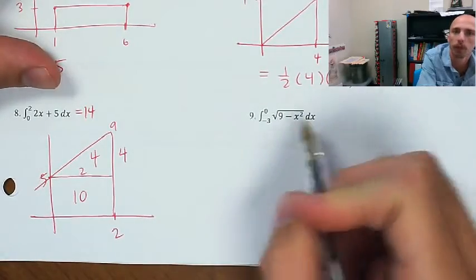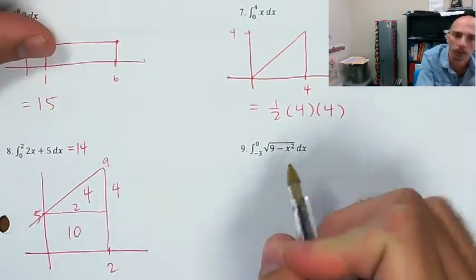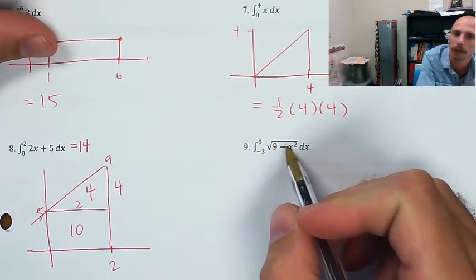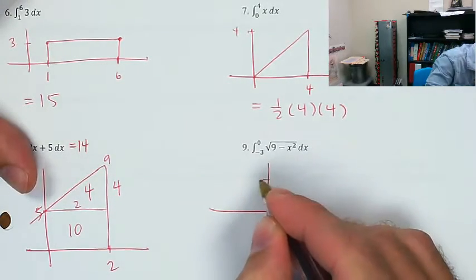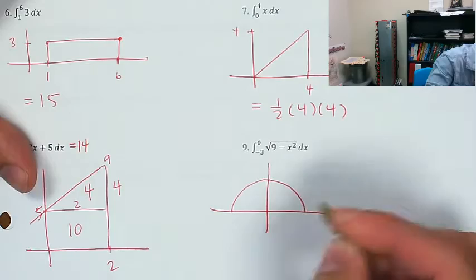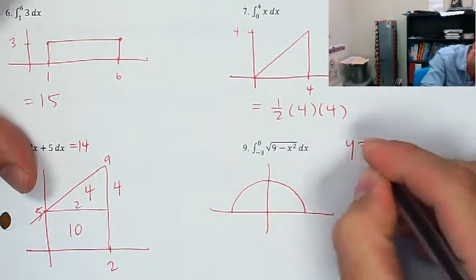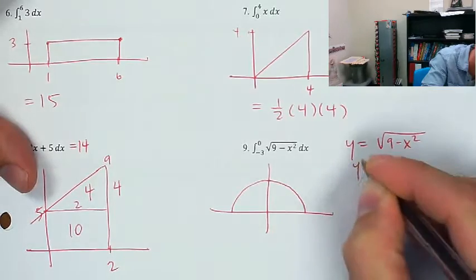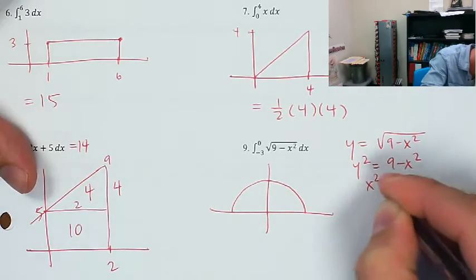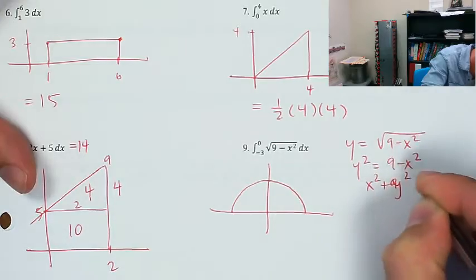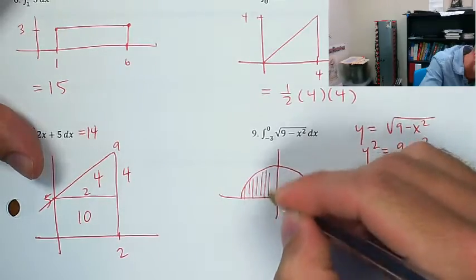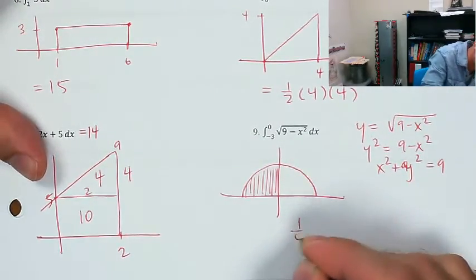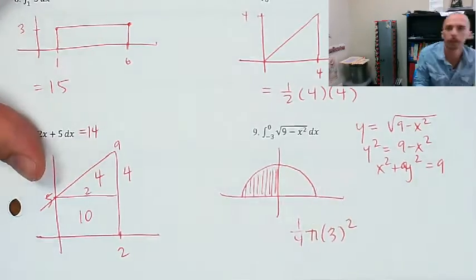This one is a little tricky, but I need you to know this. As we move forward in class, you need to know that the equation √(9 − x²) is the upper half of a circle centered at the origin with radius 3. If y = √(9 − x²), then y² = 9 − x², meaning x² + y² = 9. The area from negative 3 to 0 is one-quarter of π times the radius squared.